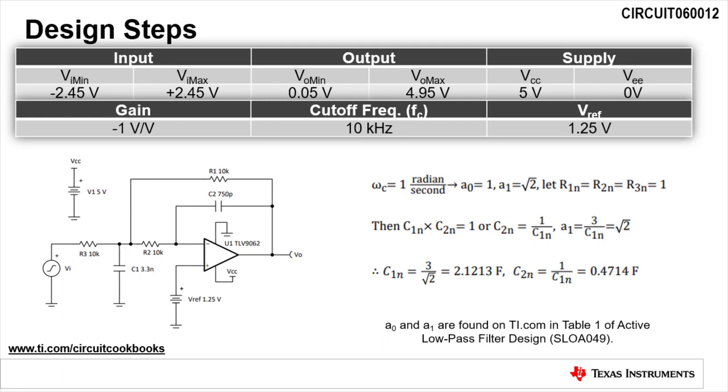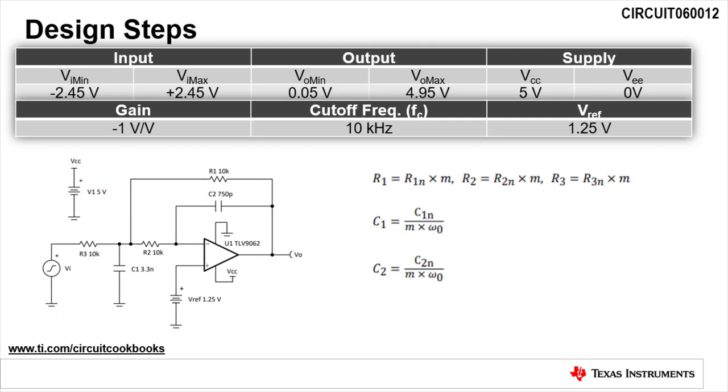The second and third lines calculate the normalized values for C1 and C2, which will also be adjusted later. Now we need to scale the cutoff frequency and the component values.